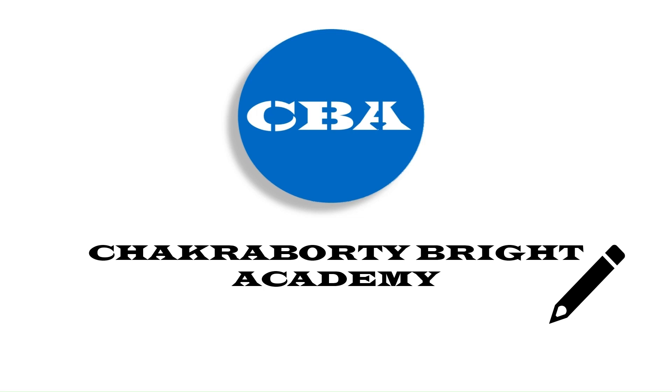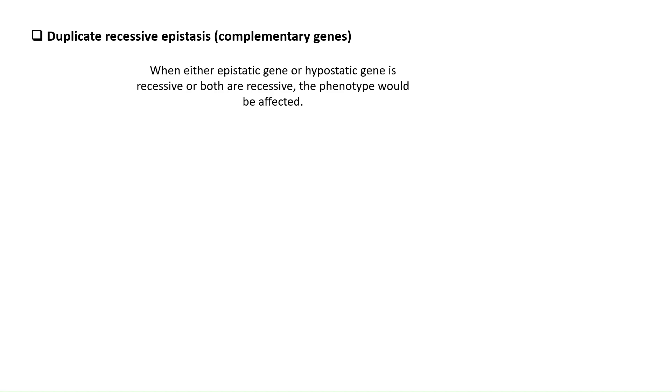Welcome back to my channel. Today we are going to study about duplicate recessive epistasis. It is also known as complementary genes, and it is the condition when either the epistatic gene or the hypostatic gene is recessive, or both are recessive — that is when the phenotype will get affected.